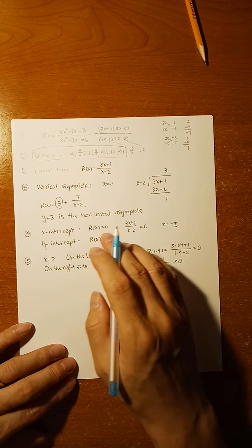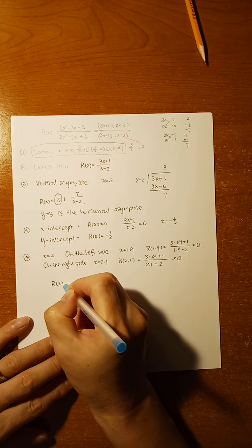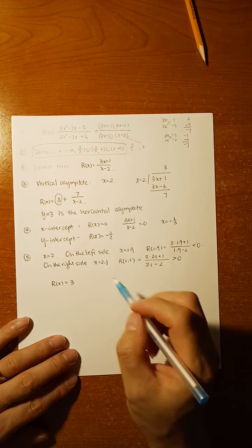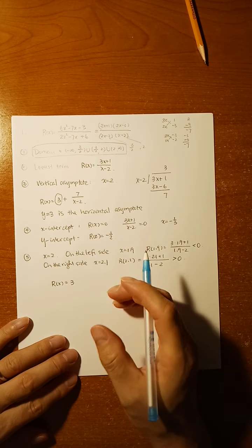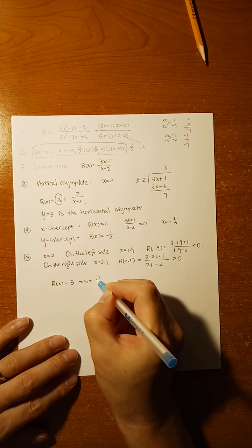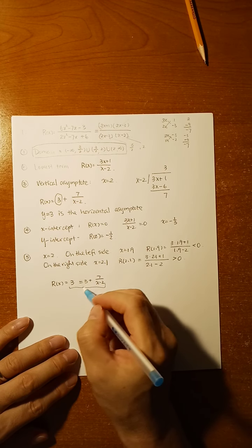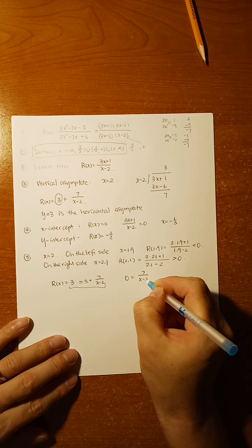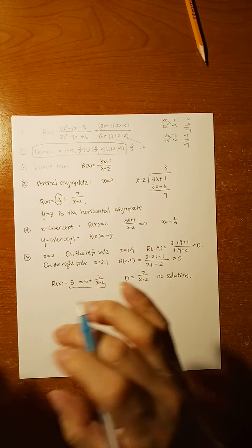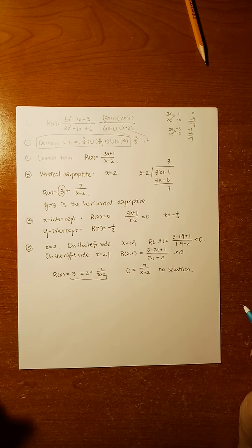For the horizontal asymptote, we want to know if the graph crosses it. We let R(x) equal 3: that gives 3 plus 7 over (x minus 2) equals 3. After canceling 3, you get 0 equals 7 over (x minus 2), which has no solution. No solution means the graph of the rational function does not cross the horizontal asymptote.